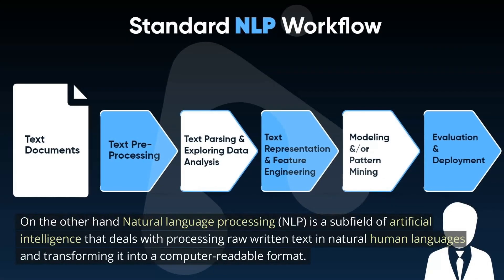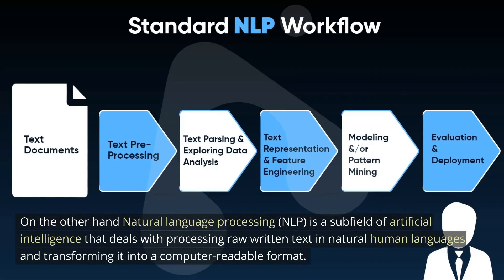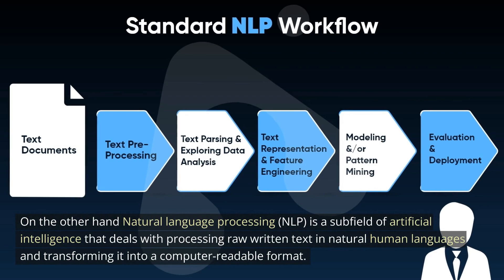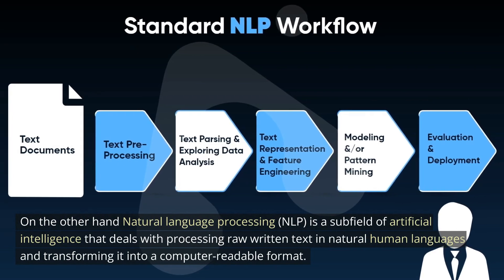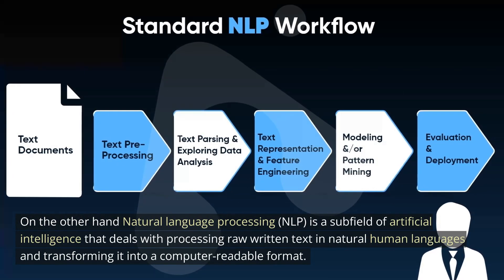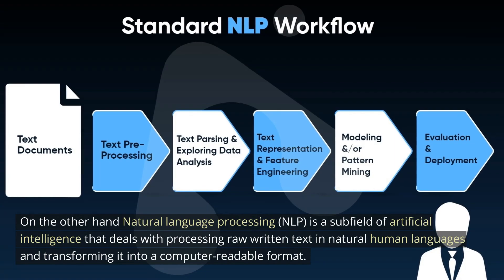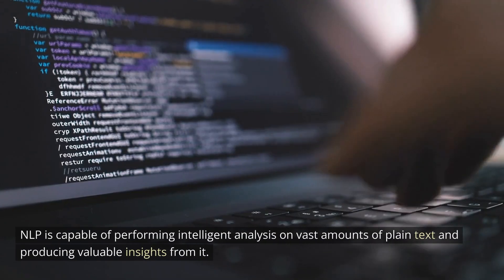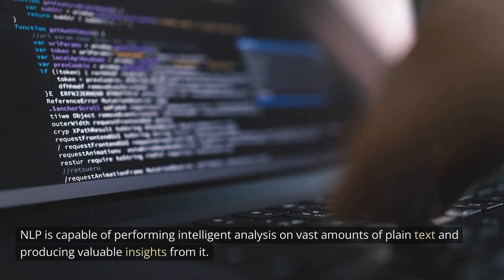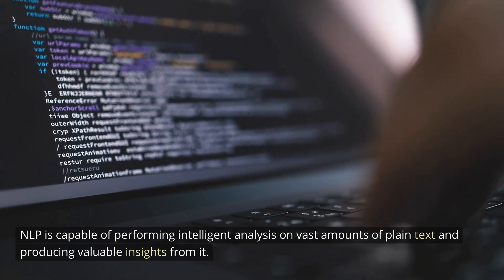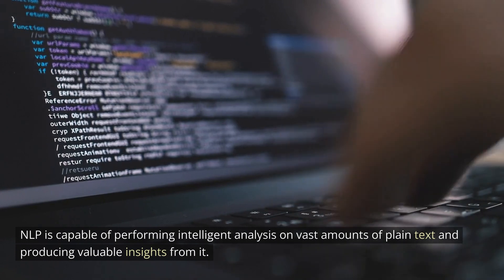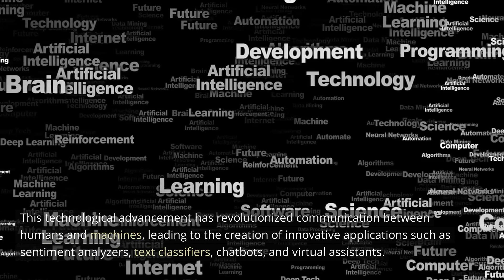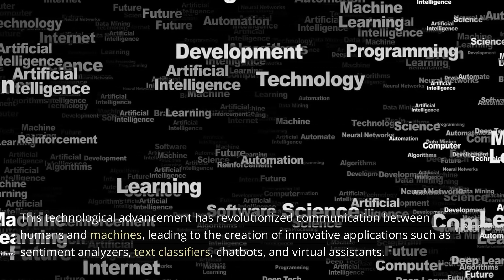On the other hand, natural language processing (NLP) is a subfield of artificial intelligence that deals with processing raw written text in natural human languages and transforming it into a computer-readable format. NLP is capable of performing intelligent analysis on vast amounts of plain text and producing valuable insights from it.